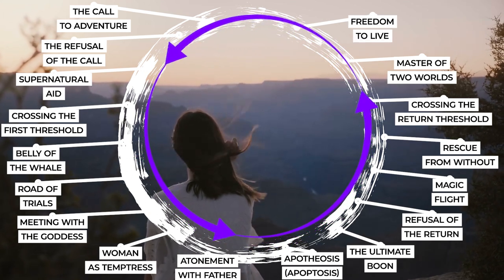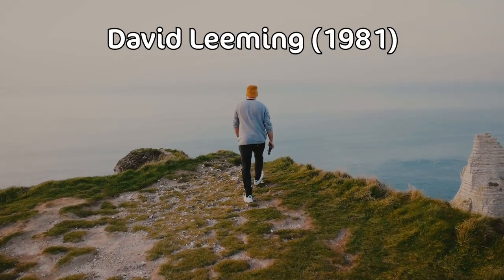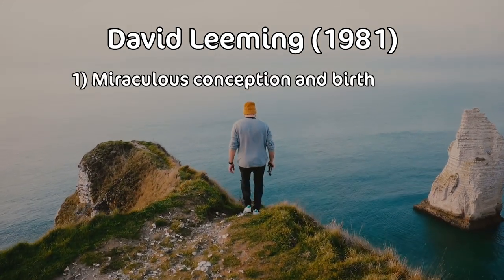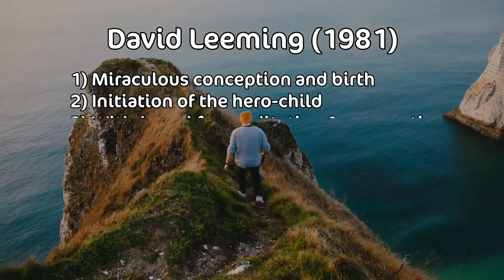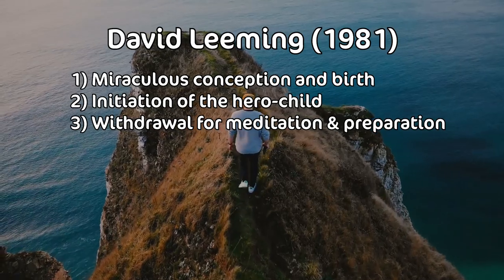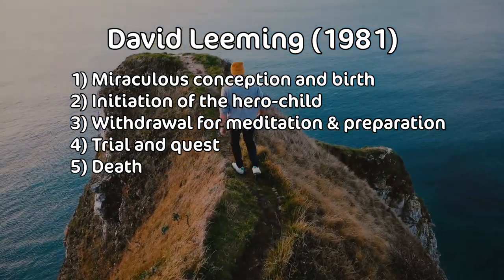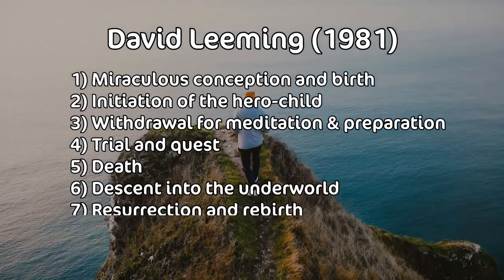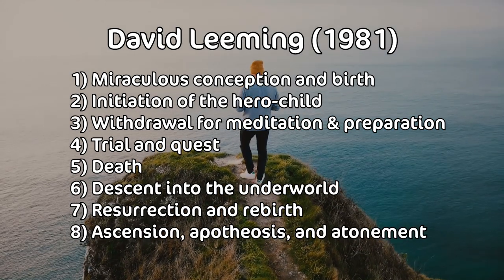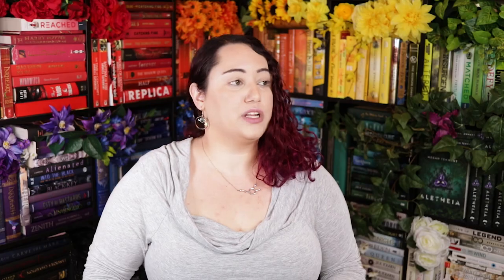Those are the original 17, but if you search the internet for the Hero's Journey, odds are you won't find the 17 Stages of Monomyth — rather you'll find one of the many condensed versions in circulation. Among those, you'll probably find three variations in particular. David Leeming's version: Stage 1 Miraculous Conception and Birth, Stage 2 Initiation of the Hero Child, Stage 3 Withdrawal from Family for Meditation and Preparation, Stage 4 Trial and Quest, Stage 5 Death, Stage 6 Descend into the Underworld, Stage 7 Resurrection and Rebirth, Stage 8 Ascension, Apotheosis, and Atonement. That one is super weird and really weirdly specific — I don't know what the hell David Leeming was doing, but that's the thing that exists that you might find.